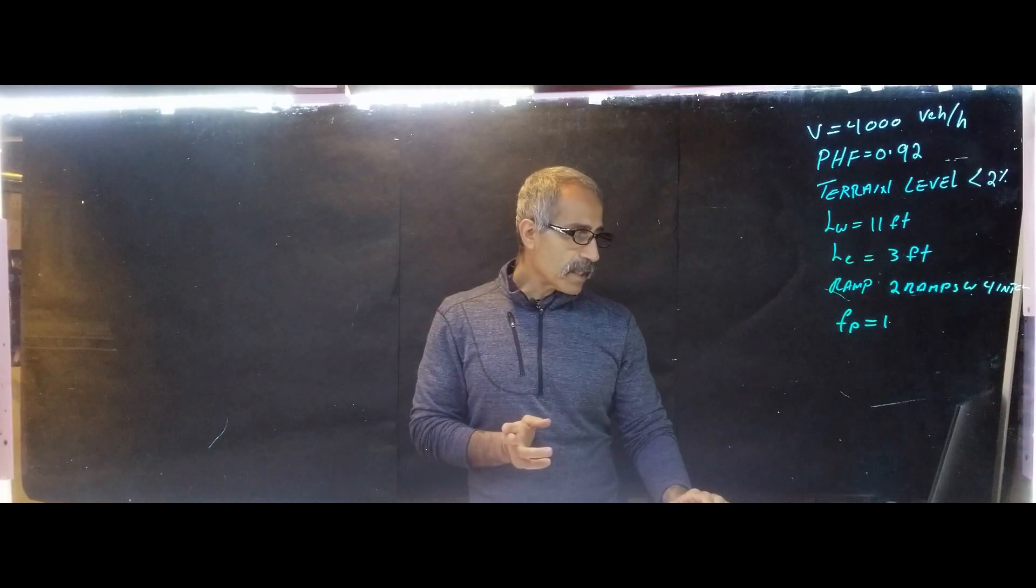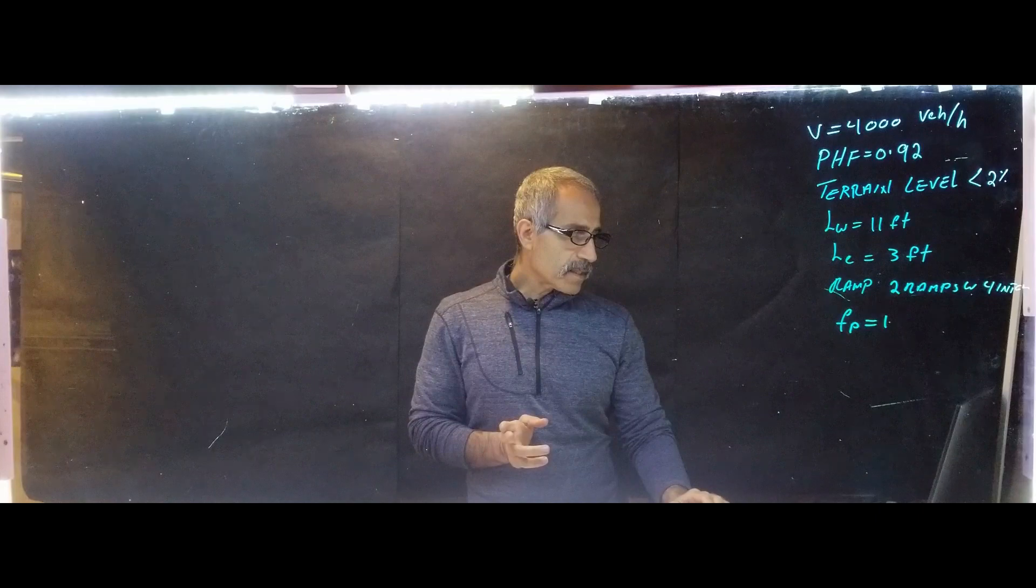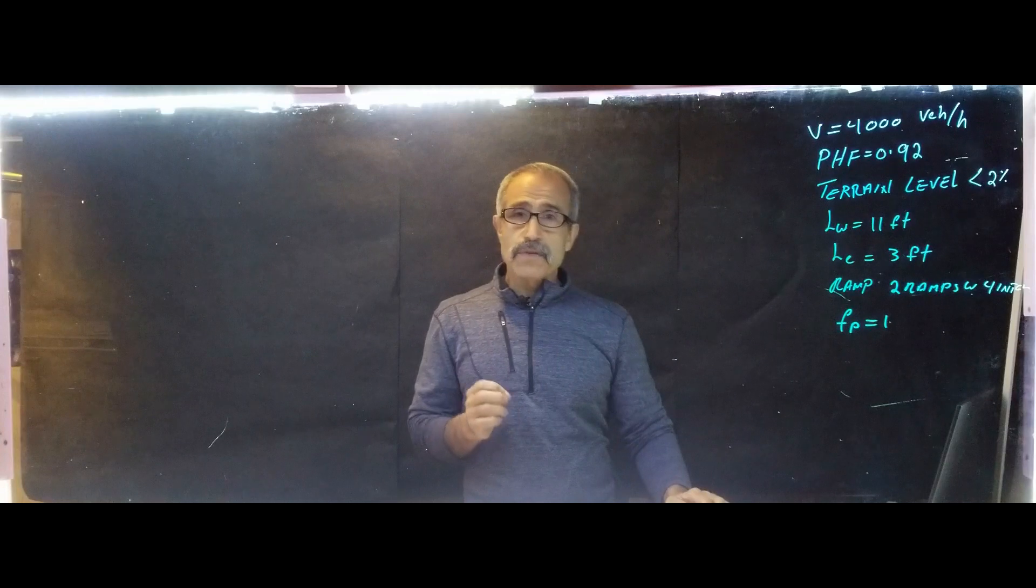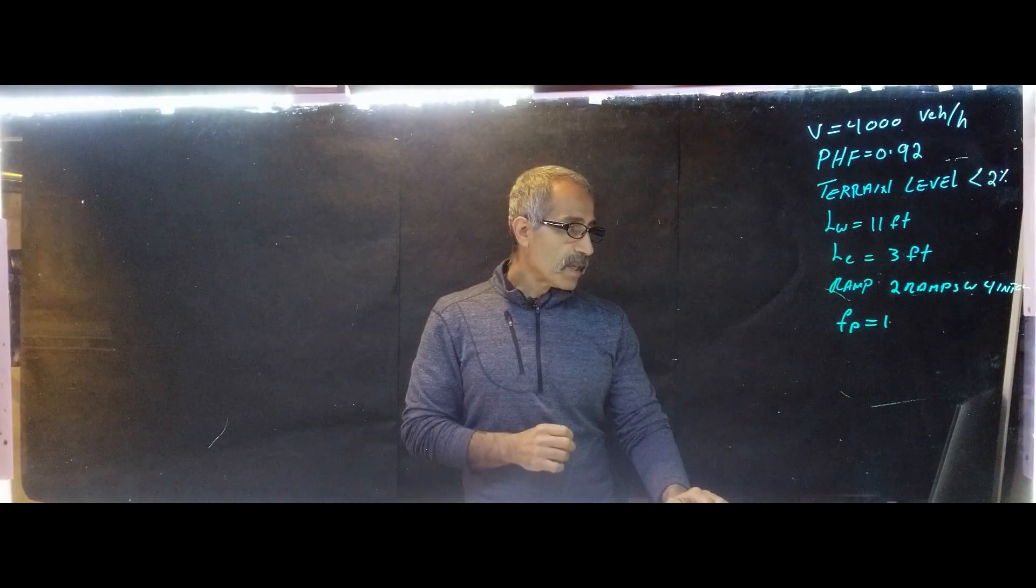And if you look up in here, we have six steps we're going to follow. Step one is the input data that we're going to either, it's given basically, or we go out in the field and get that. And step two is calculate the FFS if it's not provided in the step one. And then step three is select FFS curve, free flow speed. And step four is adjustment demand volume and five, estimate speed and density. And finally step six, finding LOS. So let's go over each one of these steps one by one. And then we'll do a problem.